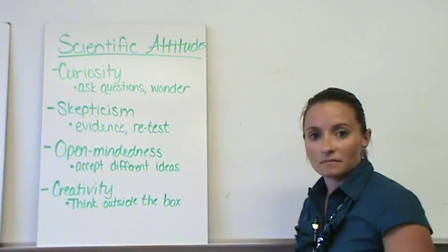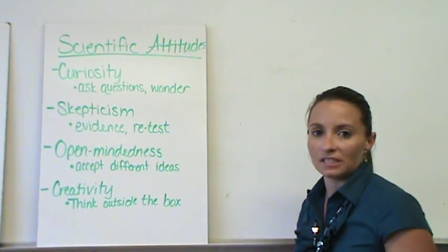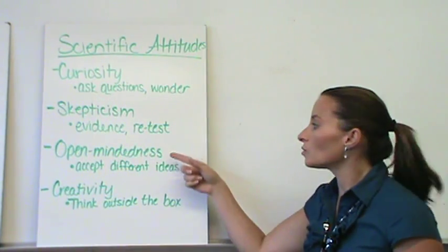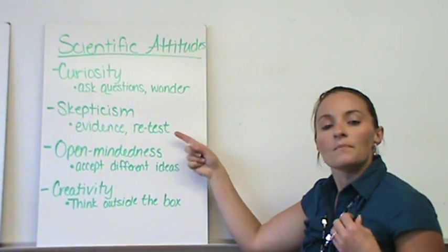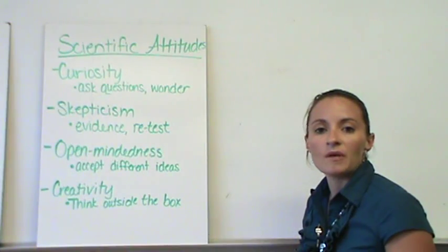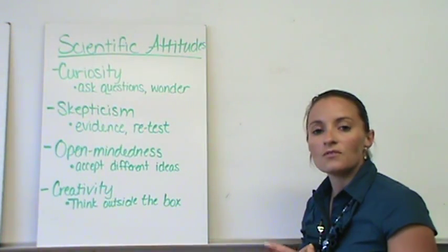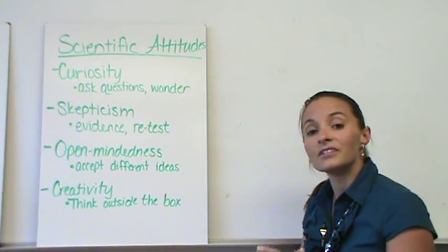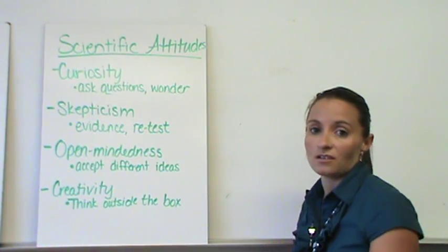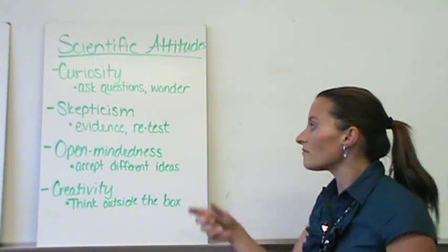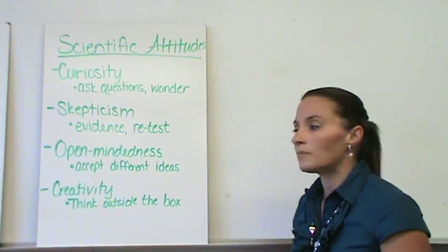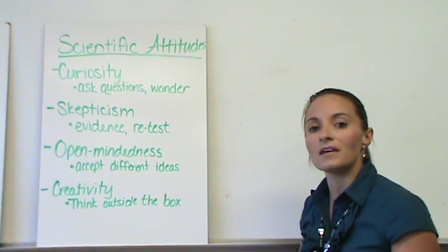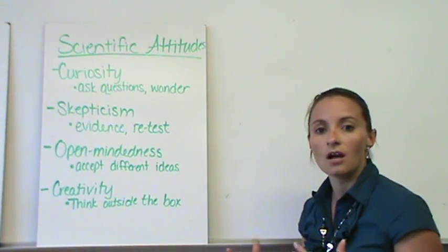The second one is skepticism. You don't want to disbelieve everything that you hear, but you want to have some evidence behind it. You want to be able to retest. A scientific experiment must have procedures to follow, and those procedures must be able to be duplicated. If you complete a project and somebody cannot duplicate that experiment, then it's hard for them to say I agree with you because they can't retest it. So there needs to be that retestability and that evidence base so that people don't just believe everything they hear.